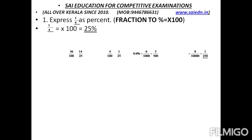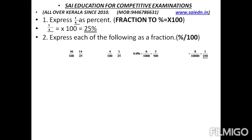That means 1 by 4 into 100. 1 by 4 multiplied by 100 equals 25. So 1/4 as a percentage is 25%.